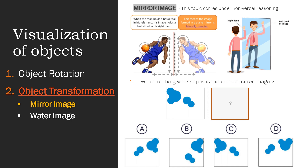In example 1, we can see a man holding his basketball in his left hand, while his mirror image shows him holding it in his right hand. In the next example, the person is lifting his right hand, and the mirror image shows him lifting his left hand. His top and bottom portion remains the same, whereas his left and right portions are interchanged.